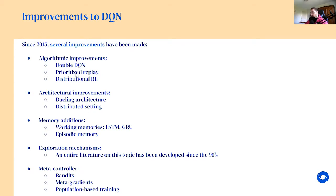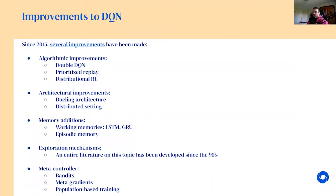Those are all algorithmic tricks — they don't depend on the architecture or the agent itself. Then you have deep learning improvements such as using a different architecture. You can also have different ways to collect data, which is what we call the distributed setting, where many actors collect data and feed it to the replay buffer. We also need to solve the problem of partial observability by adding memory to the agent. Finally, we'll look at exploration mechanisms used in modern deep reinforcement learning, and how we can optimize parameters differently from gradient descent using bandits, meta-gradient, or population-based training.